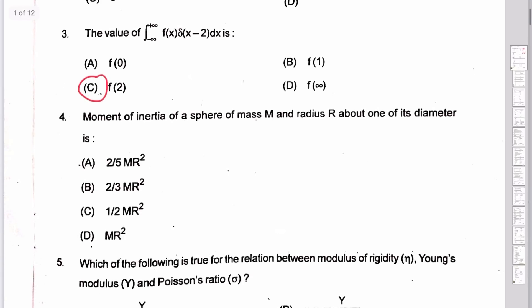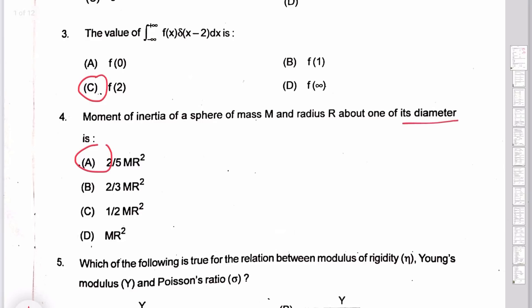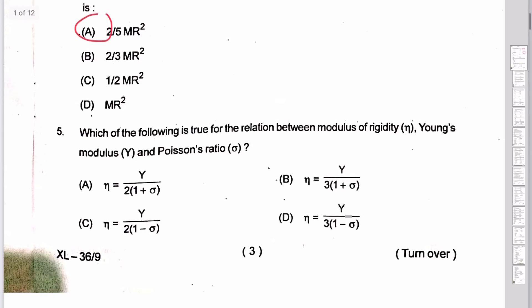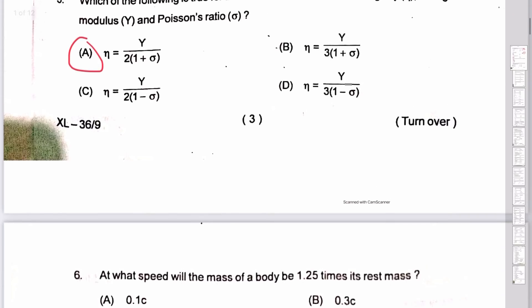The moment of inertia of a sphere: solid sphere is 2/5·mr², hollow sphere is 2/3·mr². If we have any diameter then by the parallel axis theorem: 2/5·mr² + mr² = 7/5·mr² for tangent. The fifth question is about Poisson's ratio, Young's modulus, and modulus of rigidity. The simple answer is option A: Y/2(1+σ). Option D involves bulk modulus.